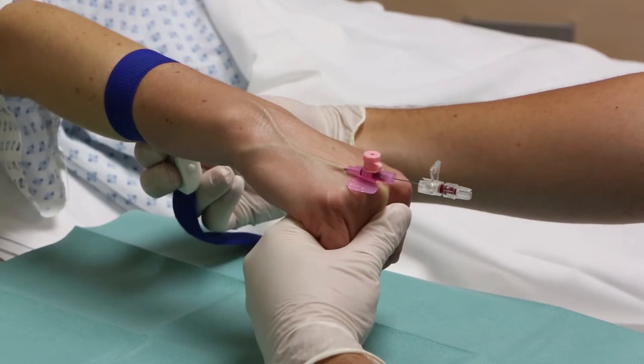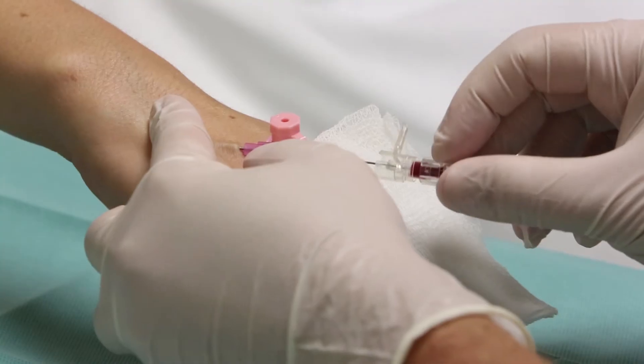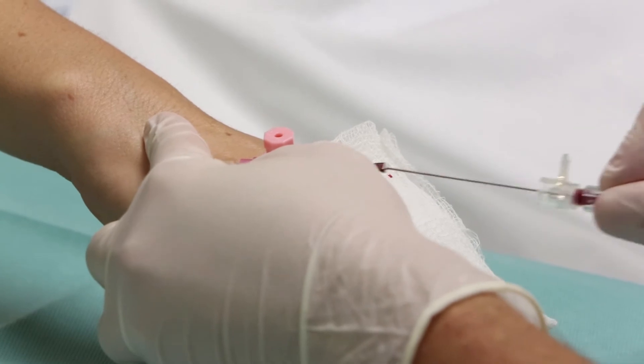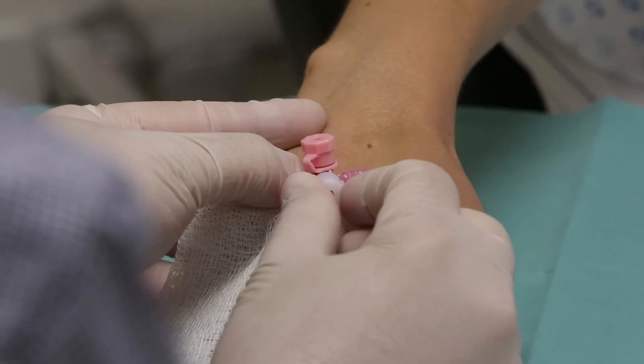Step 12. Ensure there is back flow of blood in the stylet. Remove the stylet and dispose immediately in the sharps box. Screw on the stopper.